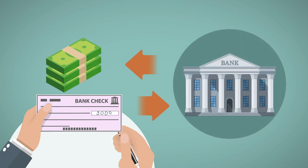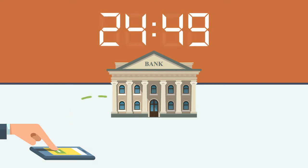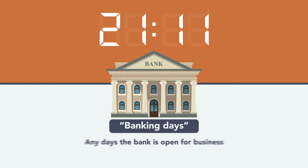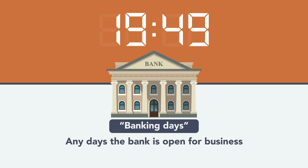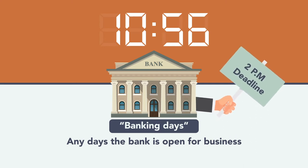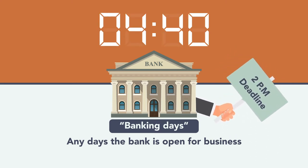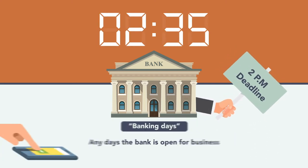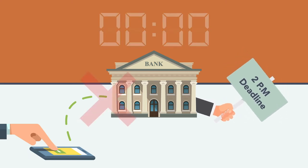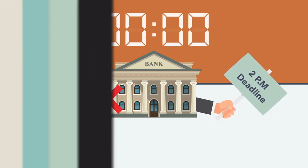When a bank receives the check or notice pertaining to its processing, the clock starts towards the midnight deadline. Banking days are any days the bank is open for business. A bank is allowed under the code to set 2 PM as the final time at which an item may be treated as received on that banking day, and any check received after that time may be treated as having been received on the following day.